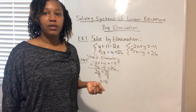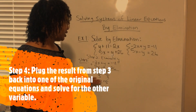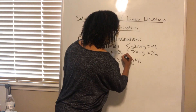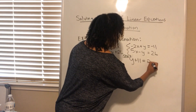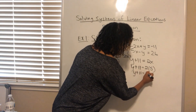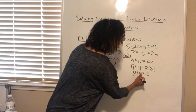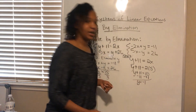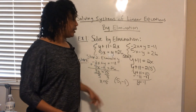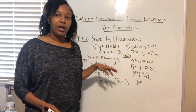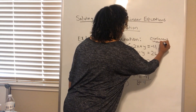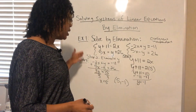Now we need to find the value of y, so for step four we take this result and plug it back into one of the original equations. Using the first one — y plus 11 equals 2x — we replace x with 5 to get y plus 11 equals 10. Subtracting 11 from both sides gives y equals negative 1. So our solution is (5, negative 1). Since we get one point, this is a consistent independent system — there is only one solution.